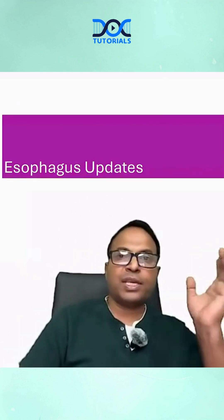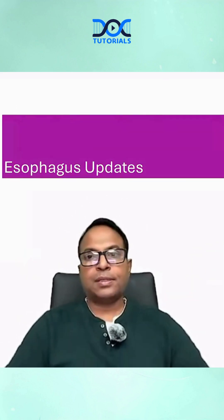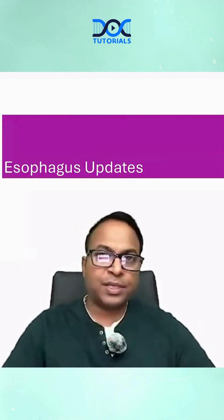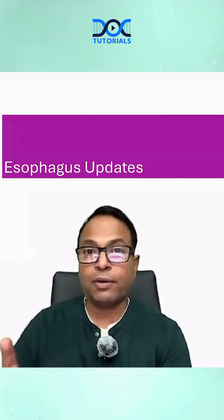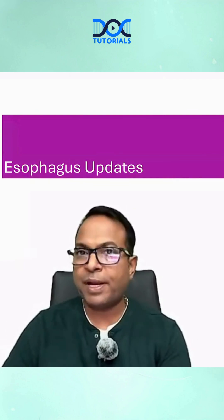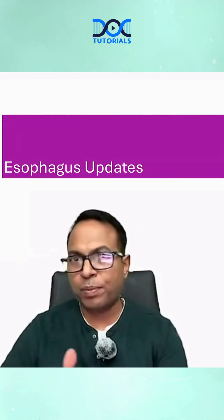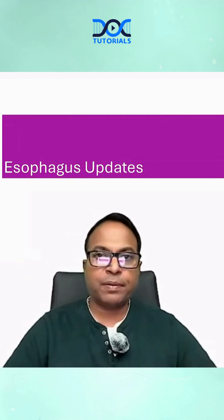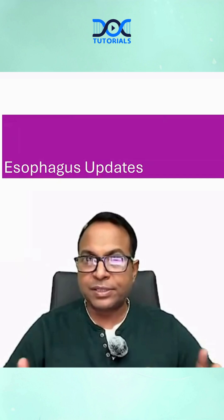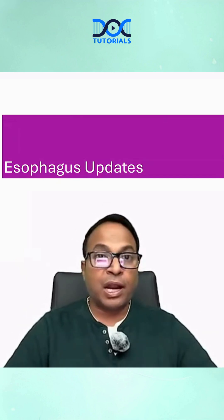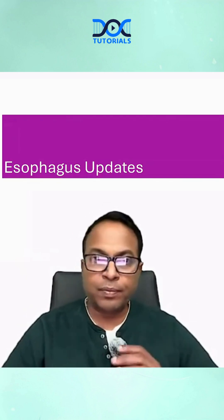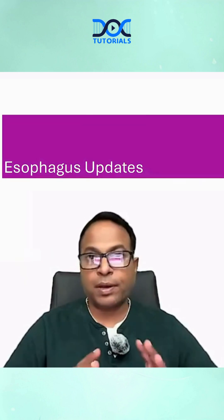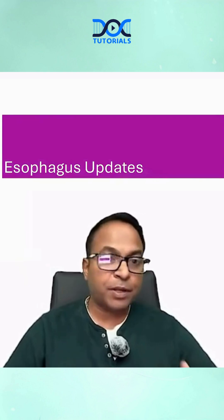Let us start with the esophagus updates. As usual, most of the updates are from the onco surgery part — every chapter has more updates in the onco section. The basic non-onco part has no major updates. The Sabiston 22nd edition is an extraordinary edition with a lot of concise content; many unwanted discussions have been removed and many interesting chapters updated.